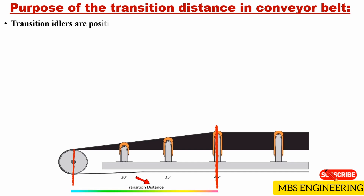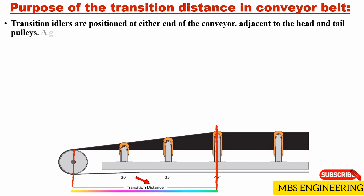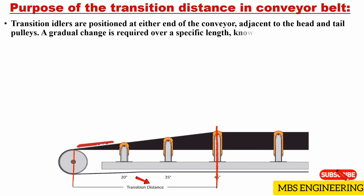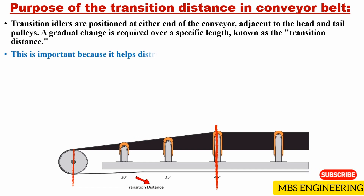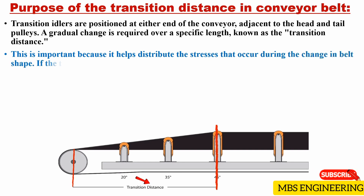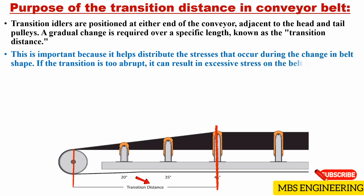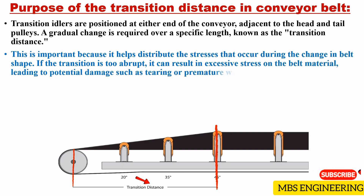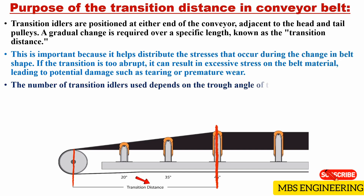Transition idlers are positioned at either end of the conveyor, adjacent to the head and tail pulleys. A gradual change is required over a specific length, known as the transition distance. This is important because it helps distribute the stresses that occur during the change in belt shape. If the transition is too abrupt, it can result in excessive stress on the belt material, leading to potential damage such as tearing or premature wear. The number of transition idlers used depends on the trough angle of the conveyor.